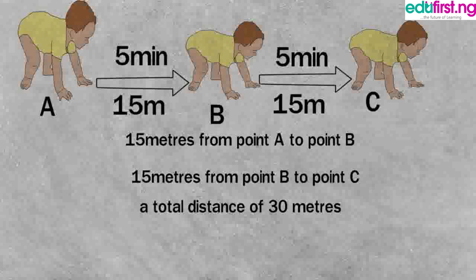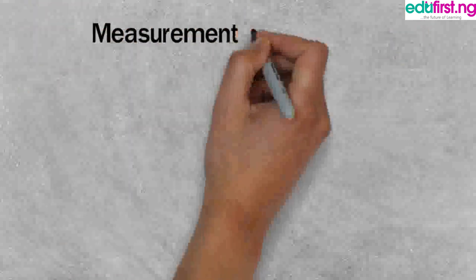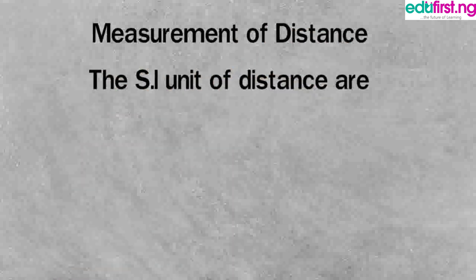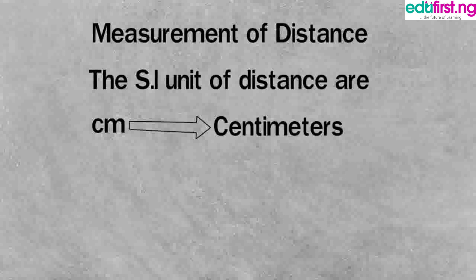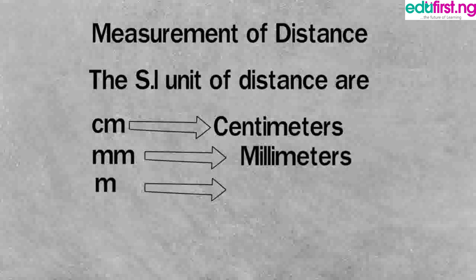Measurement of distance: The SI units of distance are cm denoted as centimeter, mm denoted as millimeters, m denoted as meters, and km denoted as kilometers.